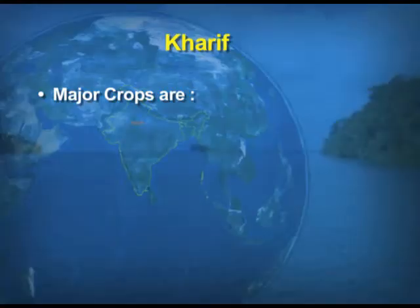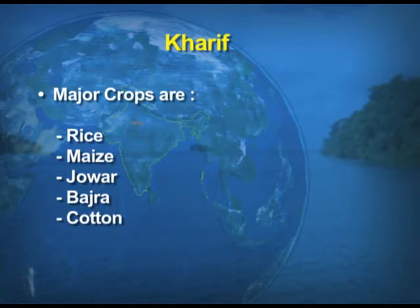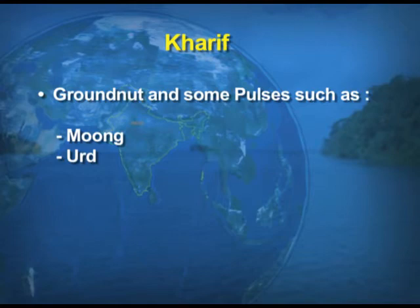The major kharif crops are rice, maize, jowar, bajra, cotton, and we also include some pulses under this crop season. For example, we talk about moong dal, udad dal, and groundnuts, which are also grown under the kharif season.